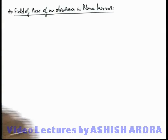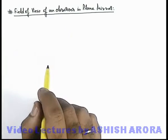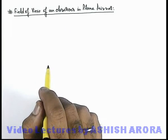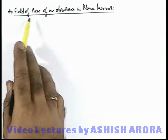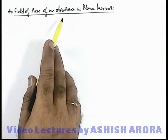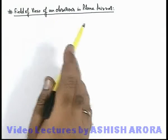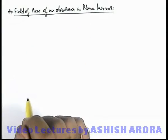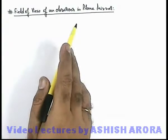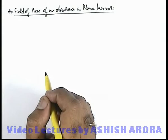Let us study about the field of view of an observer in a plane mirror. Basically, the field of view of an observer is the region which the observer is able to see inside the plane mirror, or for all the images formed in the plane mirror.